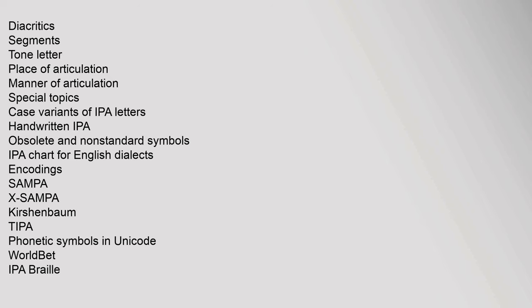Diacritics, Segments, Tone Letter, Place of Articulation, Manner of Articulation, Special Topics, Case Variants of IPA Letters, Handwritten IPA, Obsolete and Non-Standard Symbols, IPA Chart for English Dialects, Encoding: SAMPA, X-SAMPA, Kirshenbaum, TIPA, Phonetic Symbols in Unicode, WorldBet, IPA Braille.